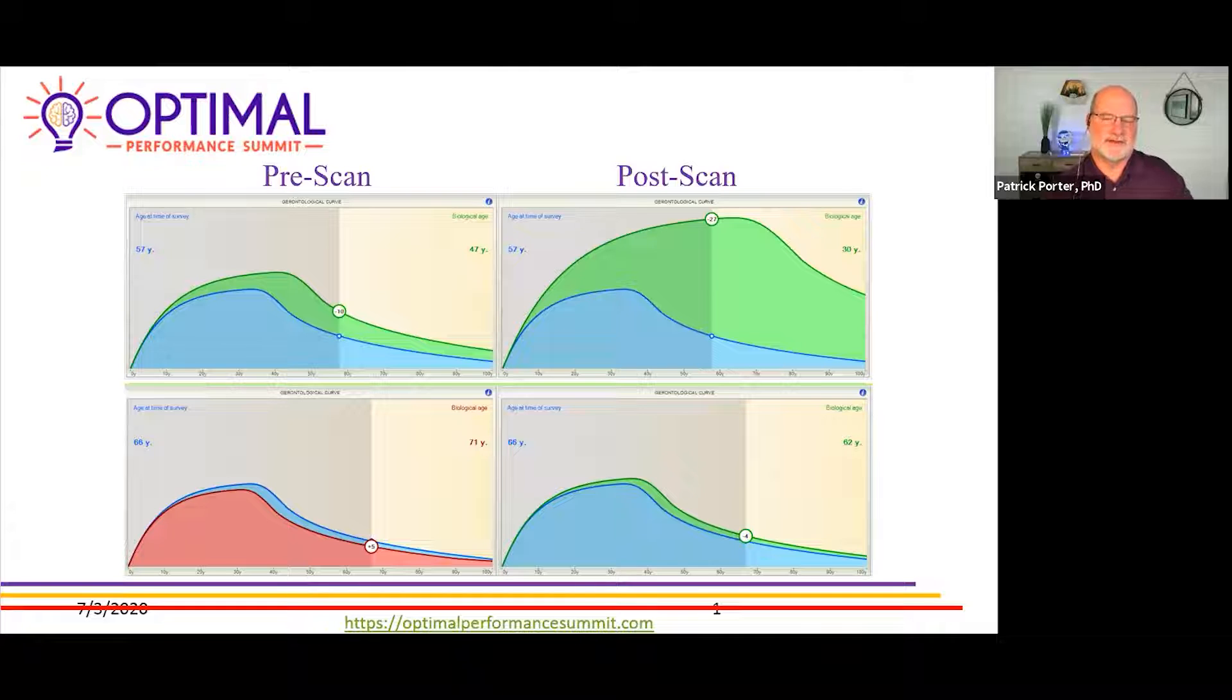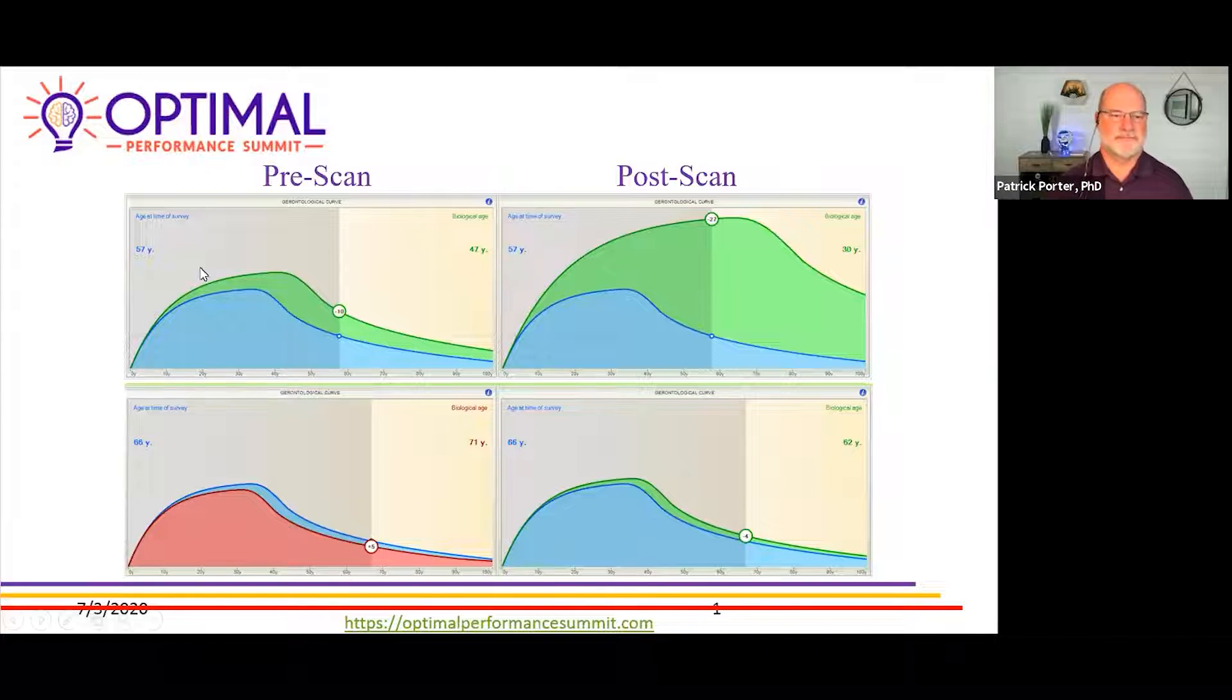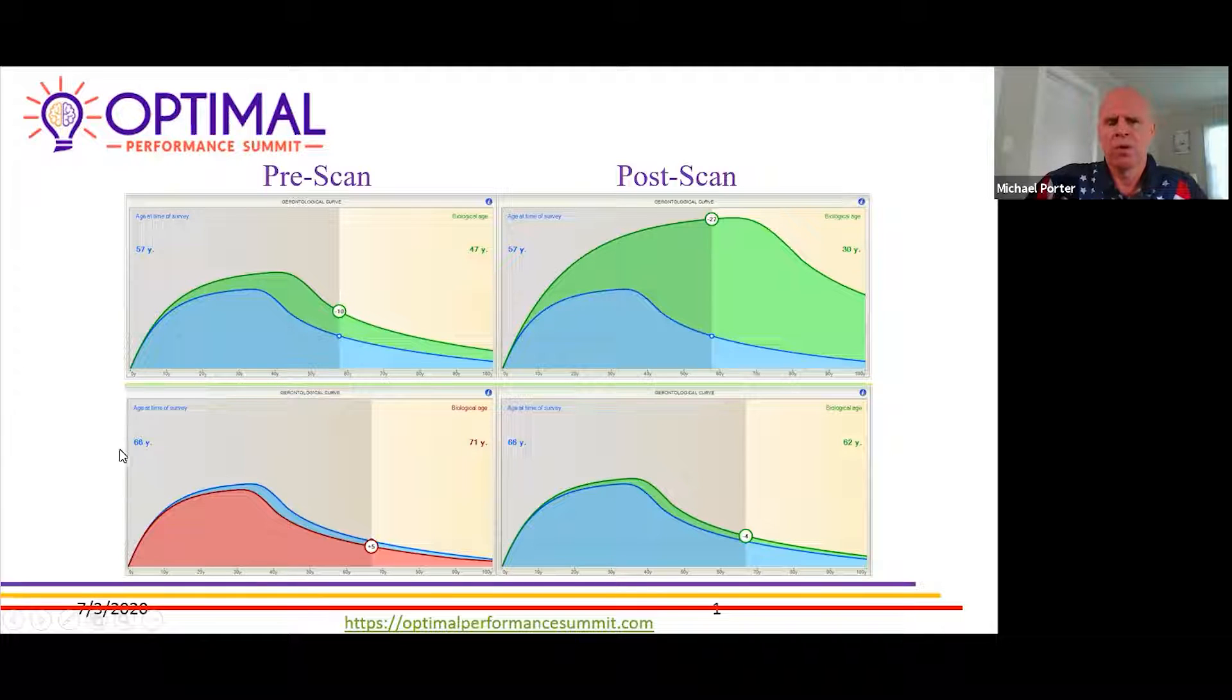When a person comes into the office, they give us their age. This person is really 66 years old, but biologically they're more like 71 because of their stress, their unbalanced nervous system, and their lack of sleep.